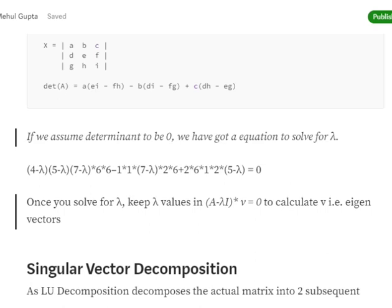Once we get our eigenvalues, we will be placing the different eigenvalues into this particular equation A minus lambda I into V that we created earlier, and we will be calculating V. Eventually we will get our eigenvectors also. In this way, we will be getting our eigenvectors and hence completing the eigenvector decomposition.